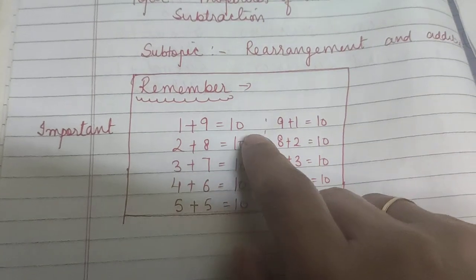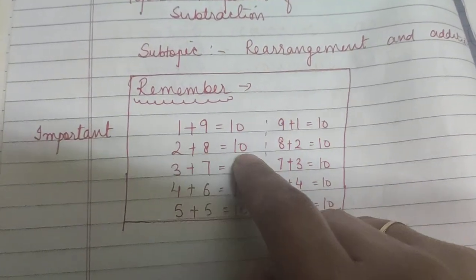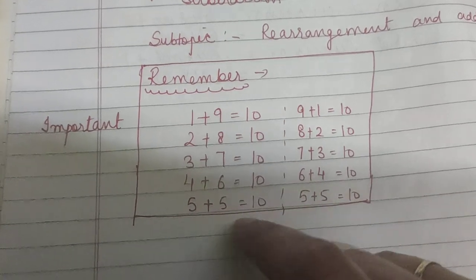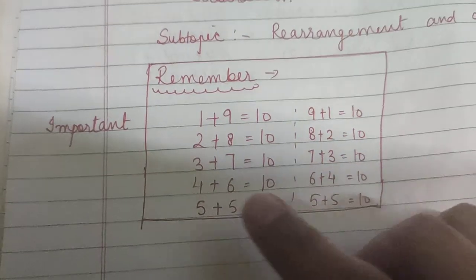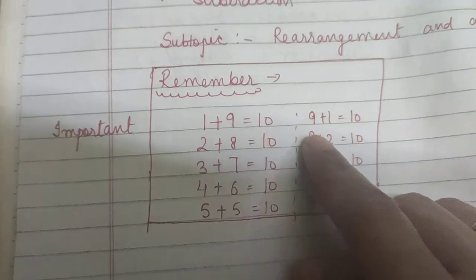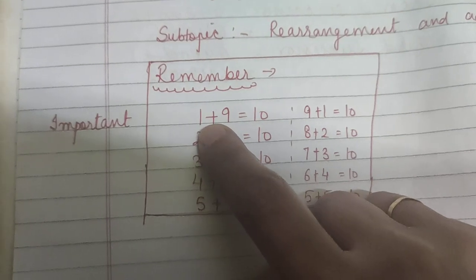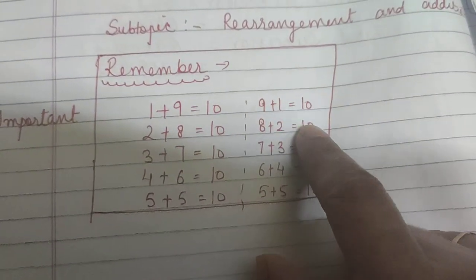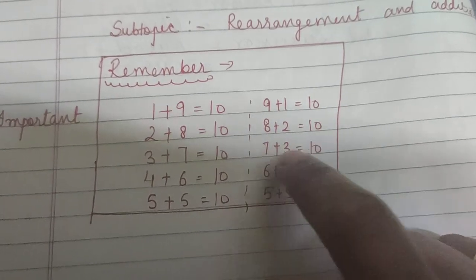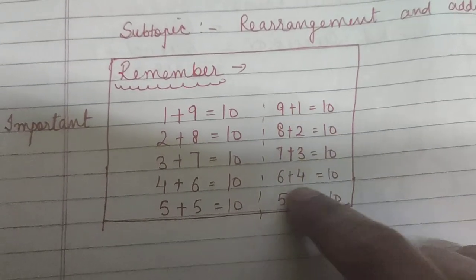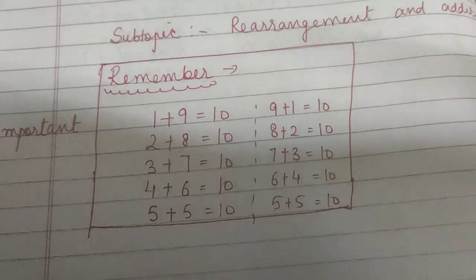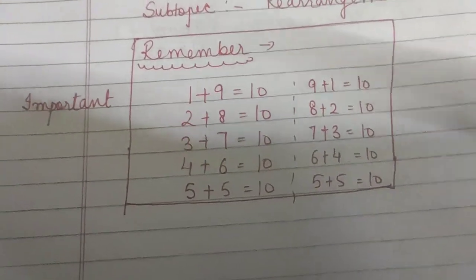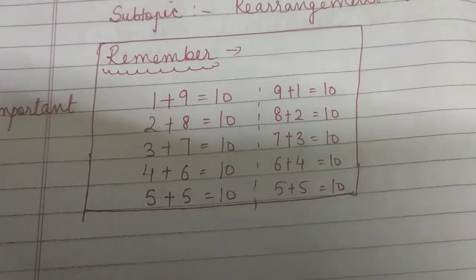1 plus 9 is 10, 2 plus 8 is 10, 3 plus 7 is 10, 4 plus 6 is 10, 5 plus 5 is 10. And vice versa: 9 plus 1 is also 10, 8 plus 2 is also 10, 7 plus 3 is also 10, 6 plus 4 is also 10, 5 plus 5 is also 10. By using these friendly numbers we can solve our next question — Question number 4.